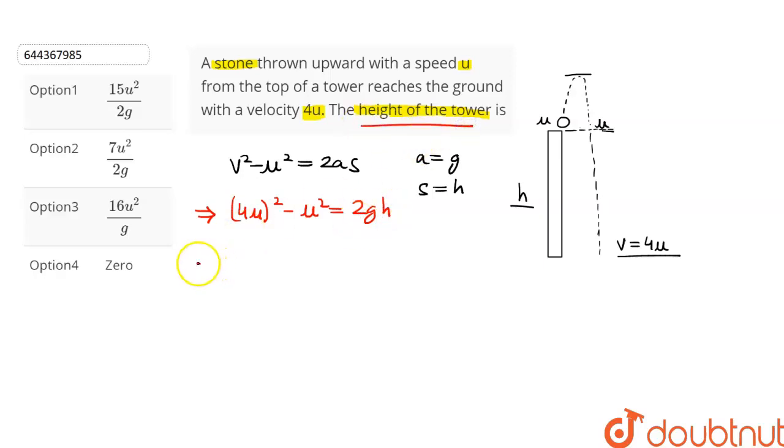We have to calculate the height of the tower. So this will give us h = (16u² - u²) / 2g. After simplifying, we get h = 15u² / 2g.